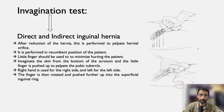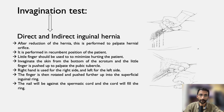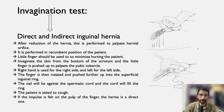The finger is then rotated and pushed further up into the superficial inguinal ring, with the nail against the spermatic cord. The patient is asked to cough. If the impulse is felt on the pulp of the finger, the hernia is a direct one. If the impulse is felt at the tip, it is an indirect one.